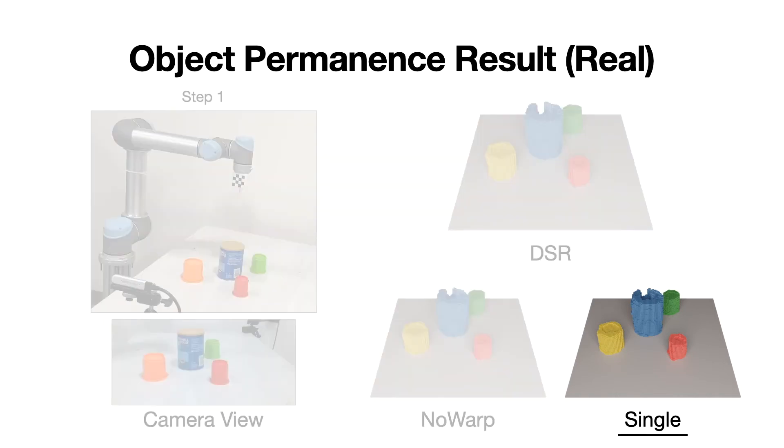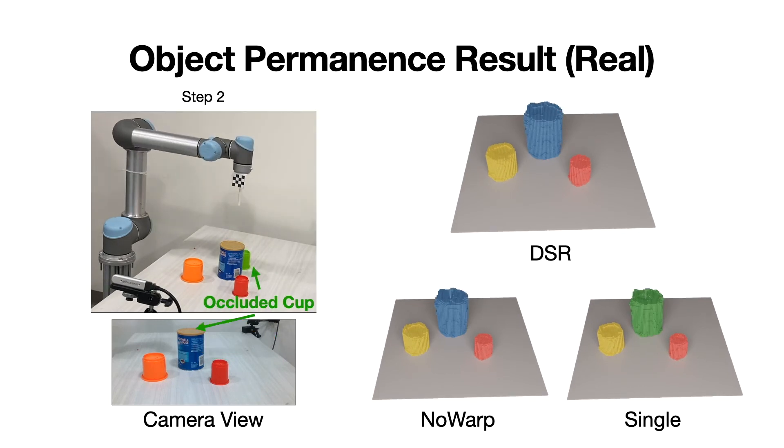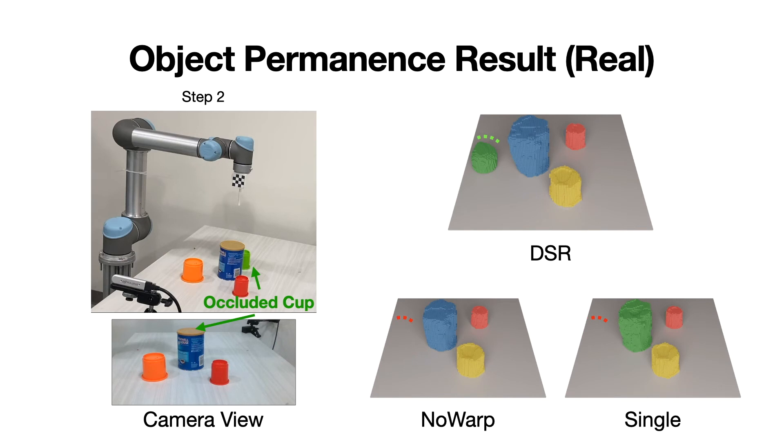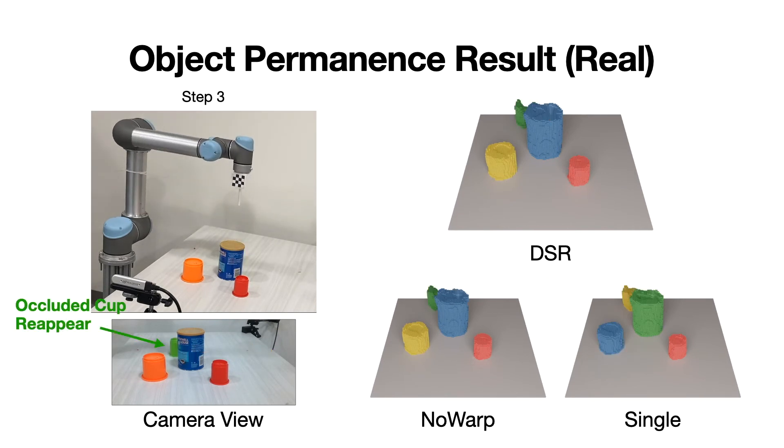we compare our aggregation model with the following alternatives. Single step means that it does not use any history aggregation. No warp means that it does not use predicted motion to warp the representation before aggregation. The green cup is pushed to be occluded by the can. We can see our model can predict the permanence of the green cup although it can't be observed. But the other two baselines fail. In the next step, the occluded green cup reappears.